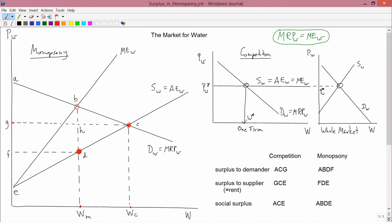The surplus of the demander I claim is ACG. That's because it's the area above the price line and below the demand curve. The demand curve is AC and the price line is GC.